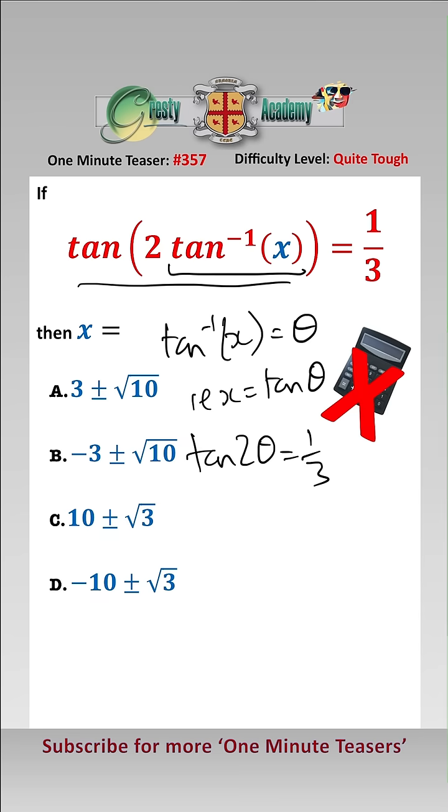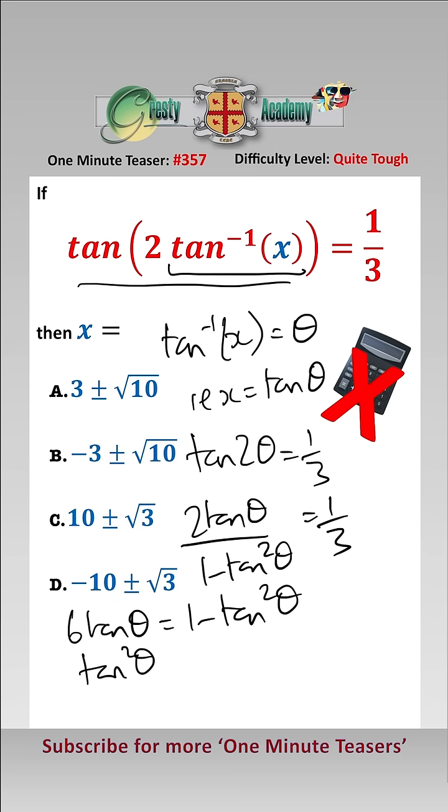Using the double angle formula, that gives us that 2 tan theta over 1 minus tan squared theta equals a third, and all we've got to do now is solve the quadratic, i.e. 6 tan theta equals 1 minus tan squared theta, or tan squared theta add 6 tan theta minus 1 equals 0.